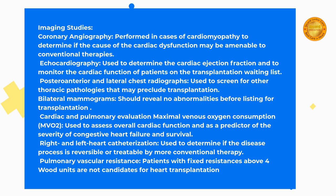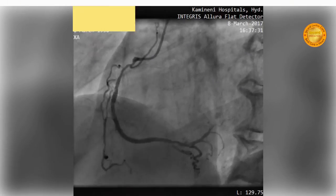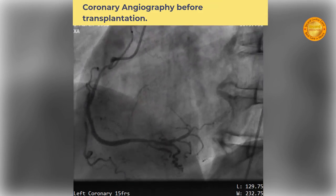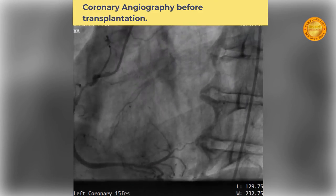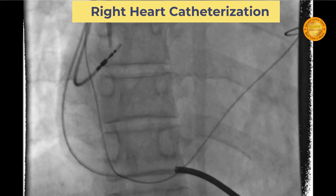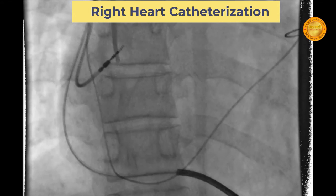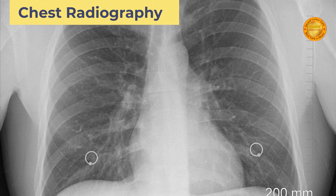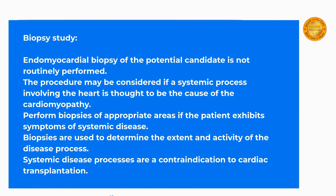Pulmonary vascular resistance is assessed; patients with fixed resistances above 4 units are not candidates for heart transplantation. Pre-transplantation workup also includes coronary angiography, right heart catheterization, and chest radiography.